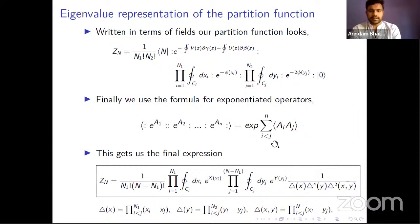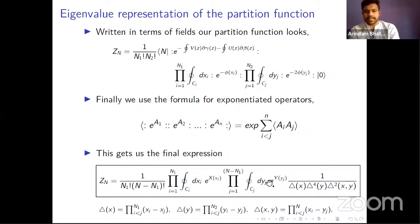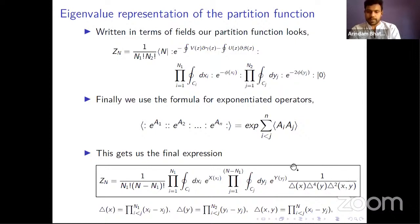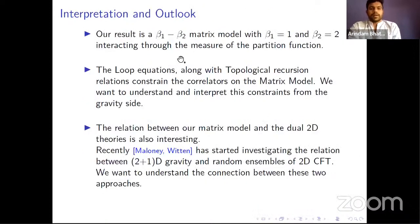The ket state can be a general function of these screening operators acting on the vacuum. Now we have the bra and ket states, so we can write the partition function. In terms of our fields, the partition function is the exponential of the Hamiltonian operator, with some powers of these screening operators. Using a standard formula for exponential operators and writing the partition function explicitly: the X's and Y's are polynomial potential terms, and there are Vandermonde determinants — so this is a two-matrix model, with the eigenvalues of one matrix given by X's and the other by Y's, interacting through an L-squared term in the Vandermonde determinants.